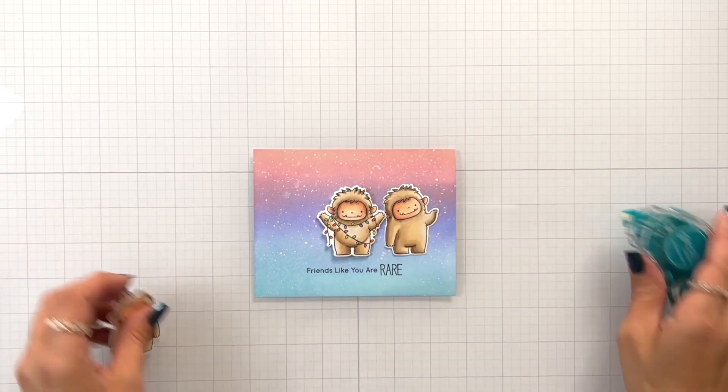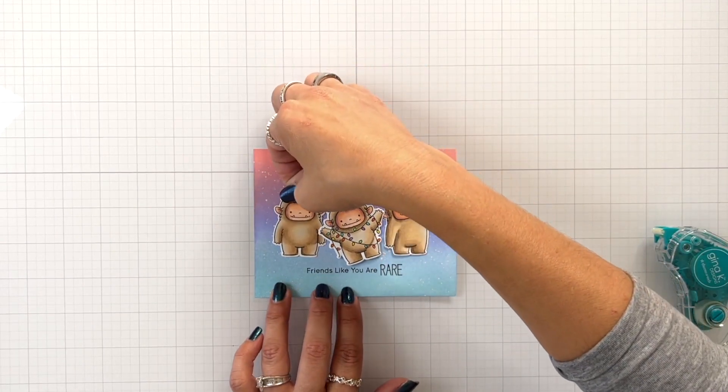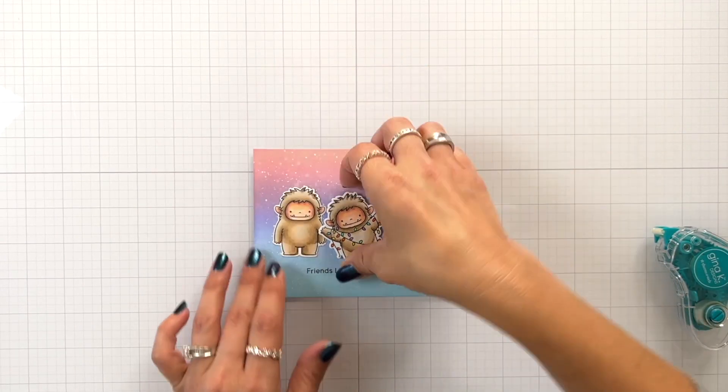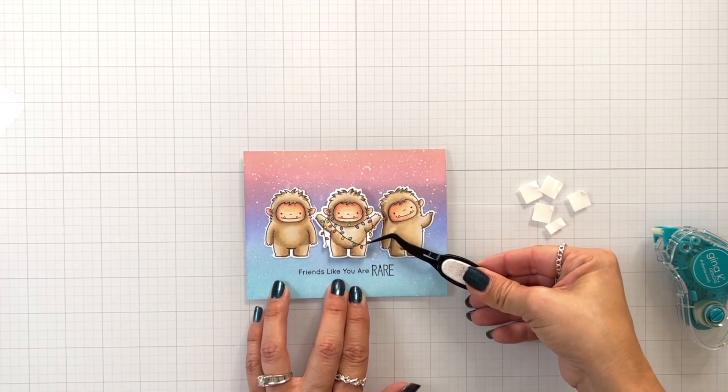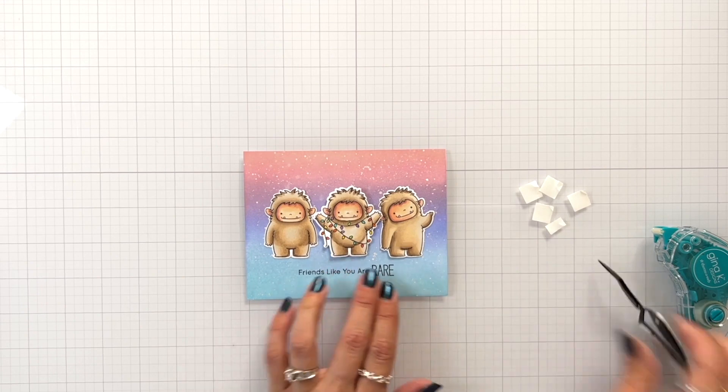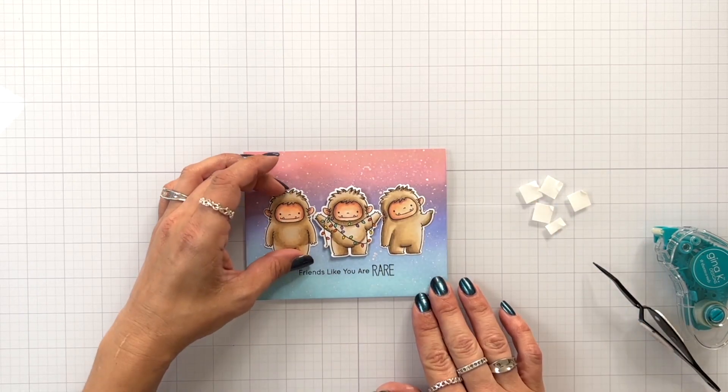Now after that background is completely dry, I lined the middle one with the lights with some foam squares and then adding tape runner behind the other two. So I have these two on the side. Now I didn't put the middle one down yet—he was just kind of a placeholder.